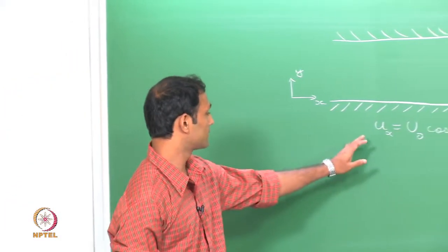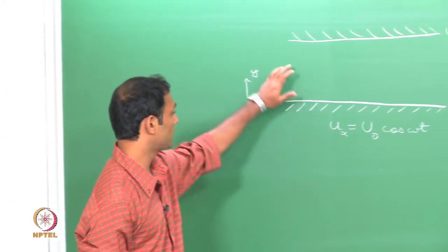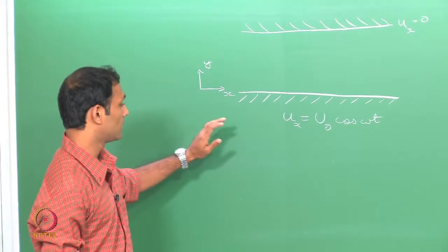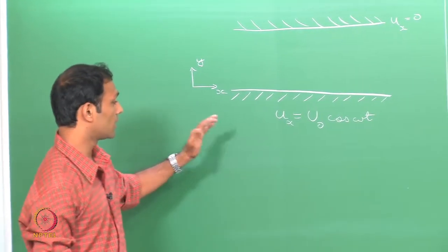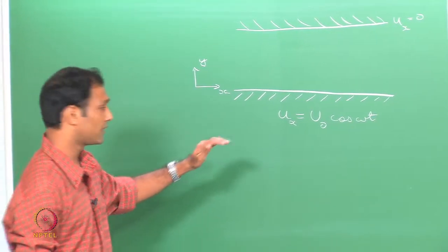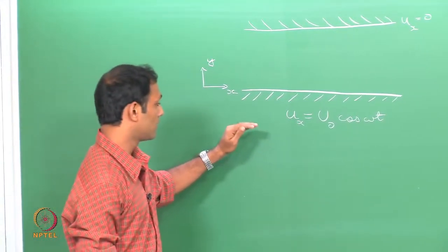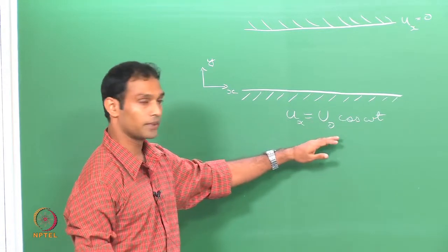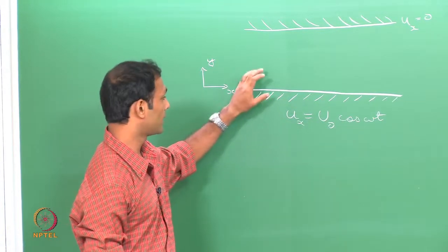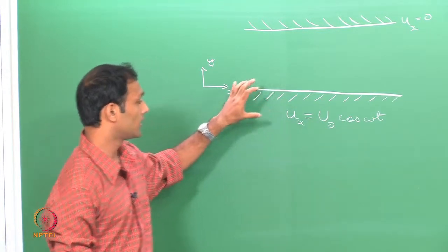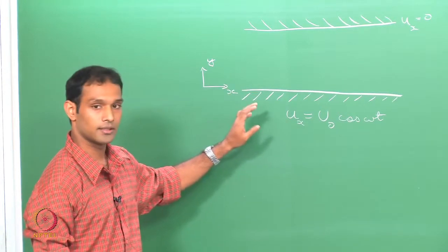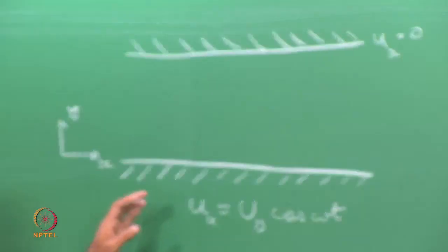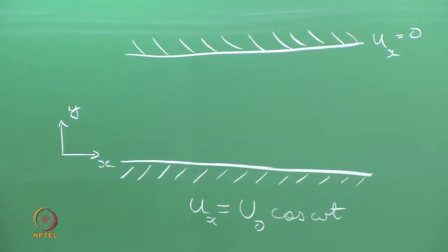So this is a transient problem. At time t equal to 0 the fluid is at rest, and we look at the case wherein the bottom wall is set into motion periodically. There are 3 time scales in the problem which we will be seeing shortly.